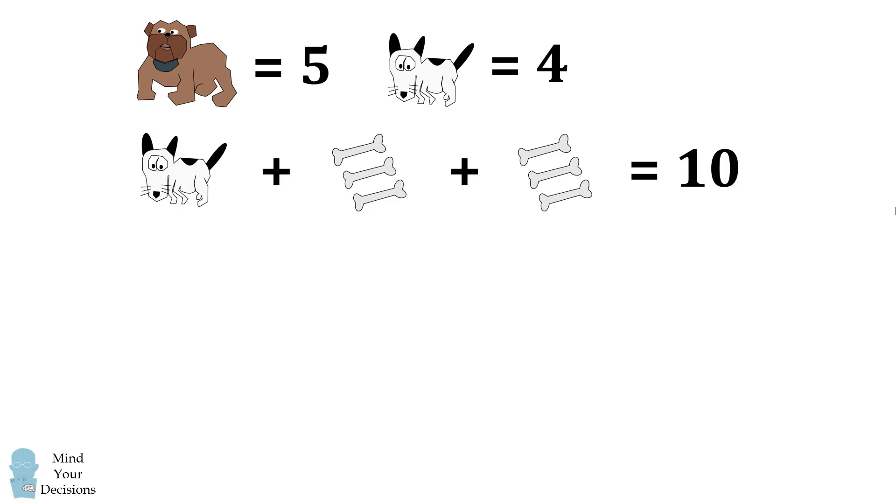Next, we have the equation that a black and white dog plus a total of six dog bones is equal to ten. We have the value of four for the black and white dog. We then have six dog bones and that's equal to ten. This means six dog bones are equal to six, so a single dog bone is equal to one.